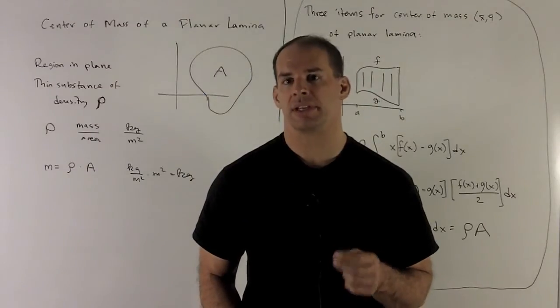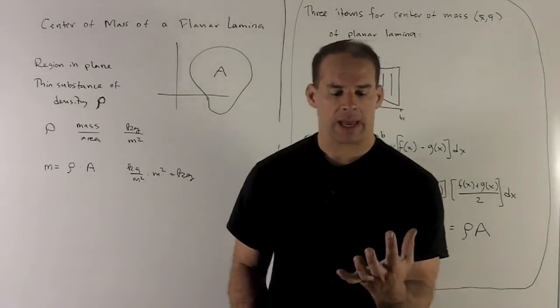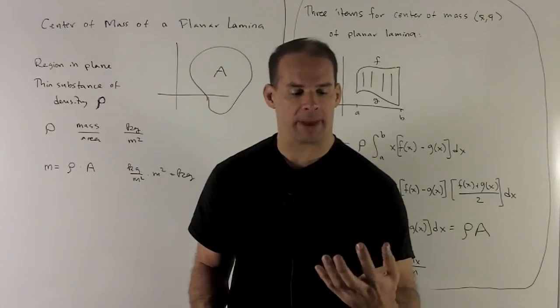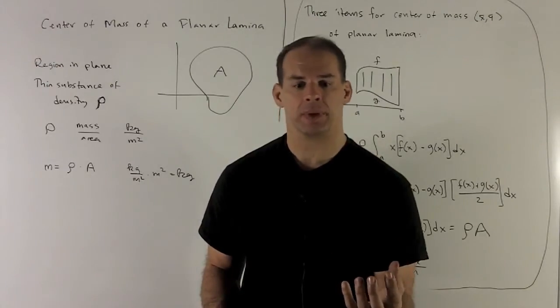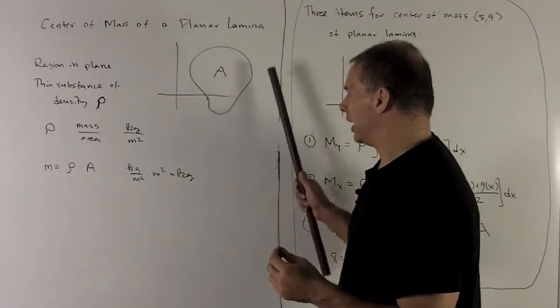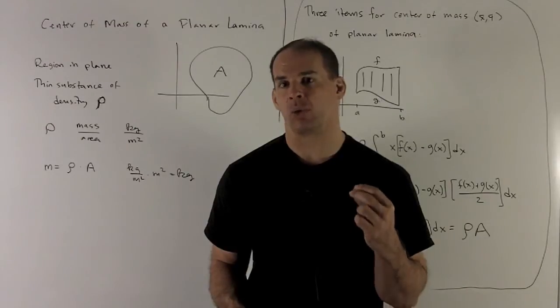Now let's consider the moments and center of mass of a plane or lamina. Before, I considered moments and center of mass for a system of point masses in the plane. What we want to do now is consider what happens when we have a region in the plane where it's composed of a thin substance of uniform density, rho.